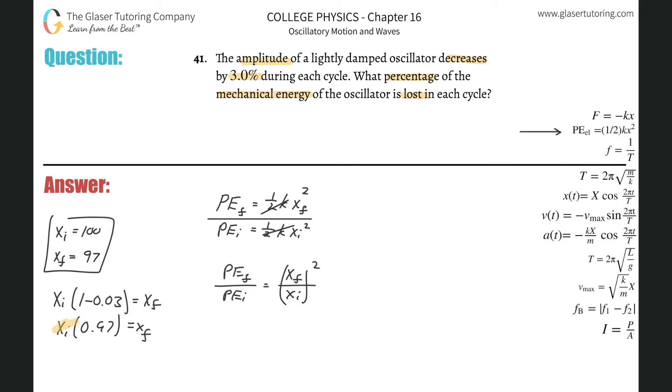So what you can do is either take this thing, plug it in for the final value. Or you could have literally taken the 100, plugged it in for the initial, and then taken the final 97 and plugged it in for the final. It doesn't matter. Both would have arrived at the same answer. I'm going to show the mathematical, the xi times 0.97 all over xi, that whole thing squared. Those xi's will cancel, and now I'm left with the potential energy final relative to the initial equal to 0.97 squared.